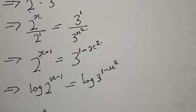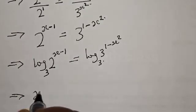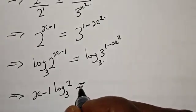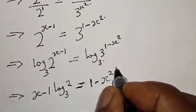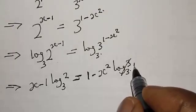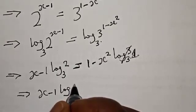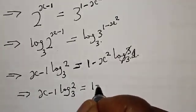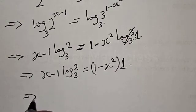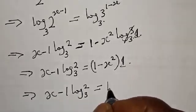Now let's use base 3 logarithms. This implies that we have x minus 1 times log 2 base 3 is equal to 1 minus x squared times log 3 base 3. Since log 3 base 3 equals 1, that term simplifies to 1. This implies that we have x minus 1 times log 2 base 3 equal to 1 minus x squared.